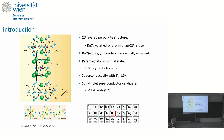The strontium ruthenate 214 system looks like a cuprate — it is a 2D layered perovskite structure. The physics from the atomic point of view involves an RuO₆ octahedron forming a quasi-2D lattice. This is a 4d system, and the four electrons are more or less equally occupied across all three t₂g orbitals.